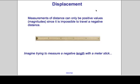Distance and displacement are similar in that they're both measured in meters, but they differ in that distance can only be positive values — magnitudes — because it's impossible to have a negative distance. Imagine trying to measure a negative length with a meter stick. Displacement, on the other hand, is not only how far, but also in which direction.